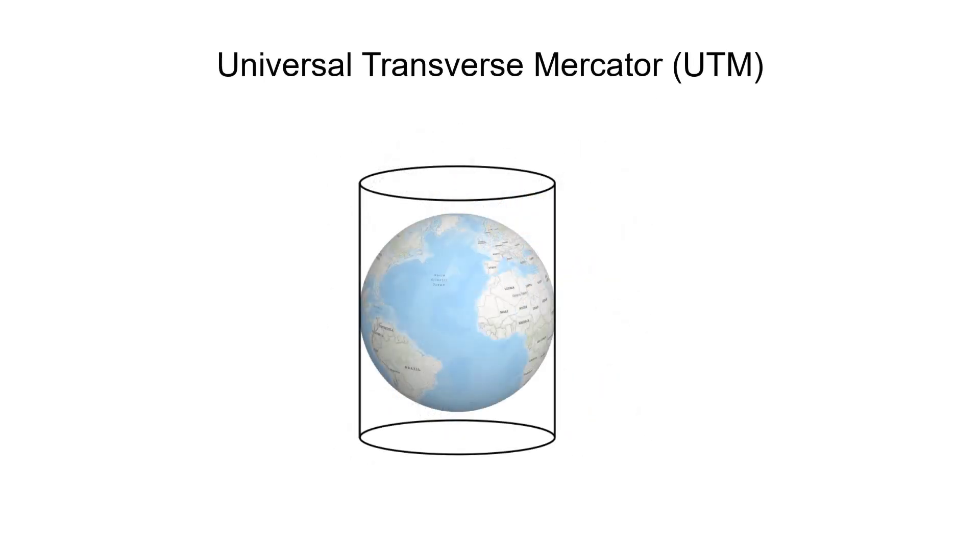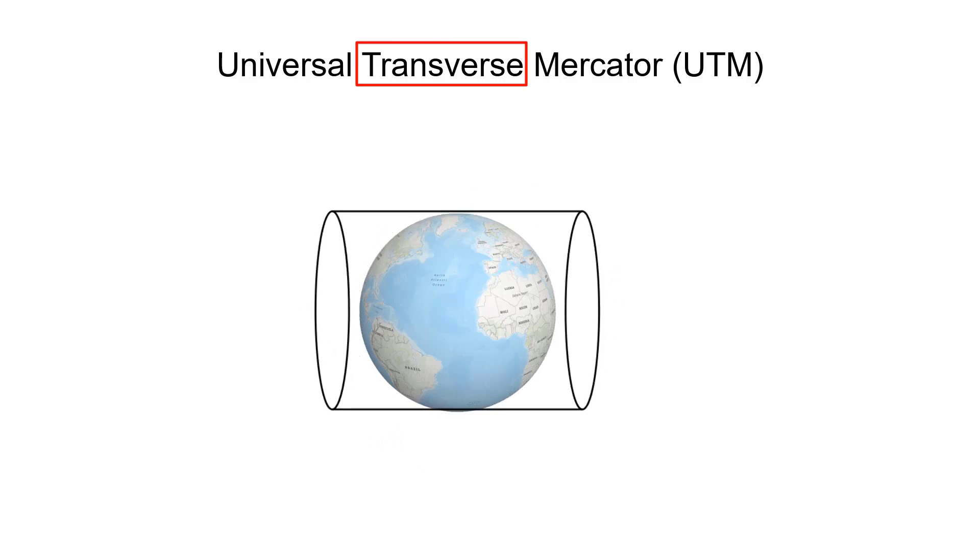The UTM projection is in the same family of cylindrical map projections except it is transverse, that is, the cylinder is perpendicular to the normal aspect.